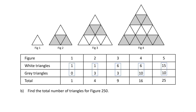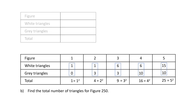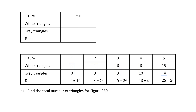We can now see a pattern in the total number of triangles — these are all square numbers. 1 equals 1², 4 equals 2², 9 equals 3², 16 equals 4², and 25 equals 5². So the total number of triangles for figure 250 will be equal to 250 squared, which equals 62,500.